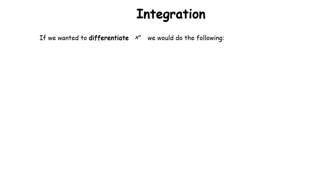Integration is the backwards step to differentiation. All of our operations in maths come in pairs — anything we can do, we can undo with a different operation. For example, if I add 3, I can undo that by subtracting 3. So let's talk about differentiation so we can start to understand integration.